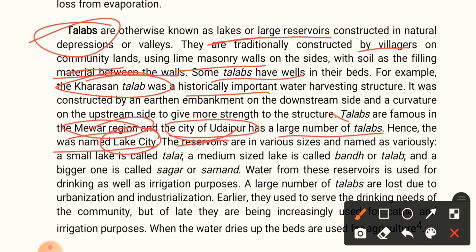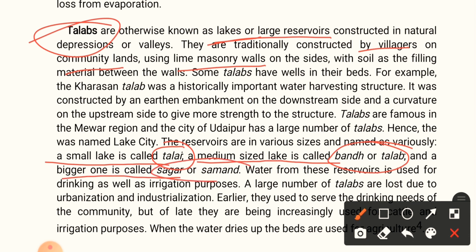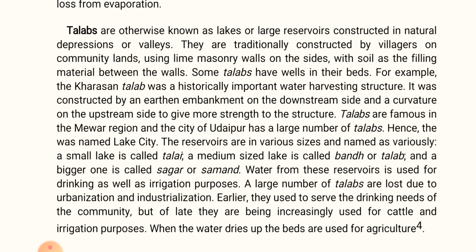Talabs are known by various names depending on their size. A small lake is called a talai, a medium-sized lake is called a band or talab, and a bigger one is known as sagar or samand. Water from these reservoirs is used for both drinking and irrigation. A large number of talabs have been lost due to urbanization and industrialization.